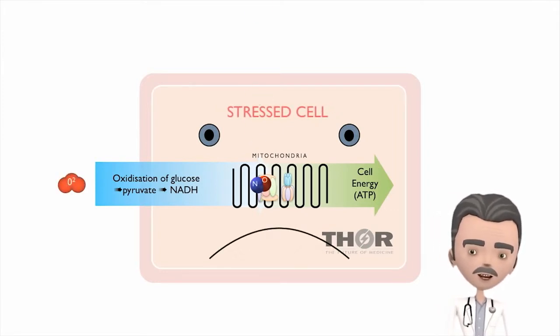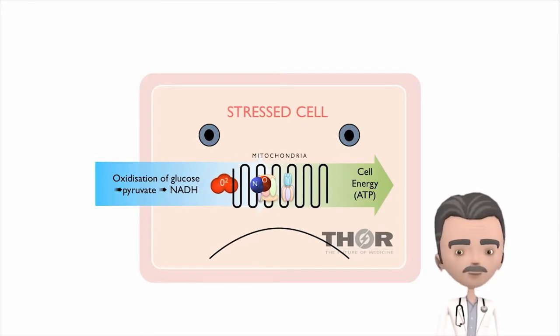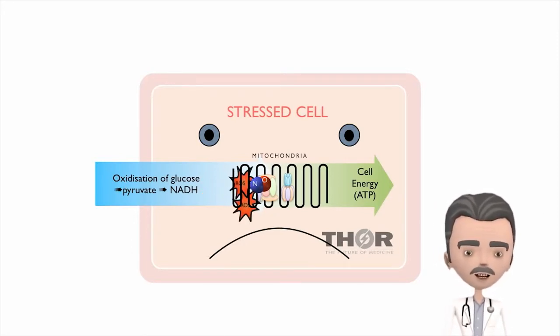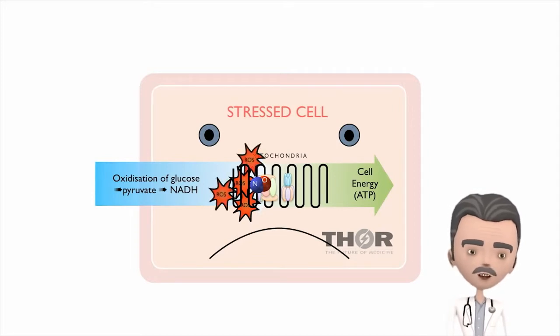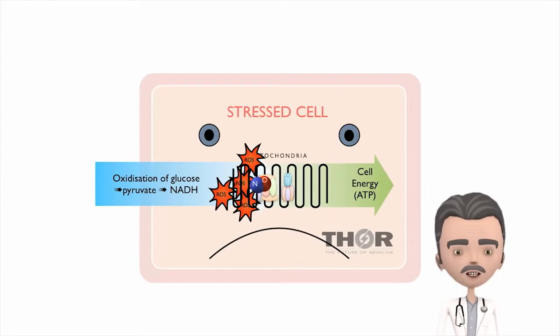The nitric oxide competes with oxygen. It binds to cytochrome C oxidase and competitively displaces the oxygen. This stops the production of ATP and increases oxidative stress.